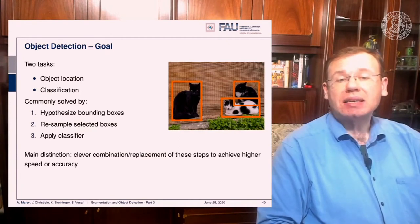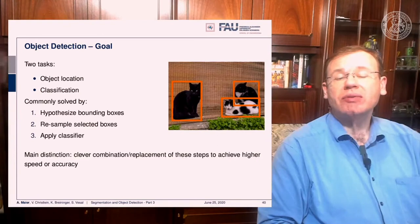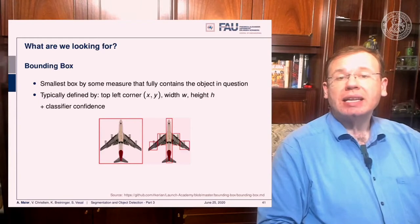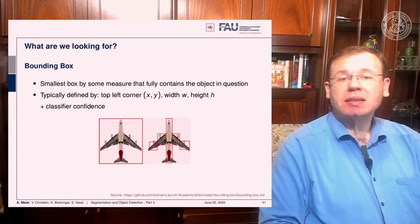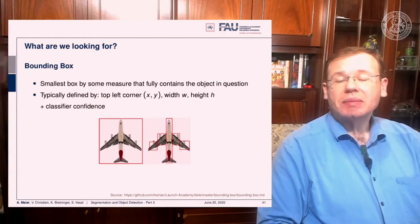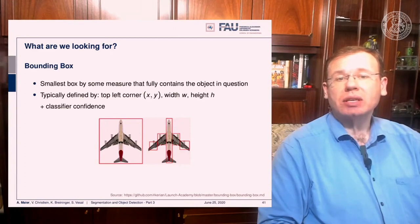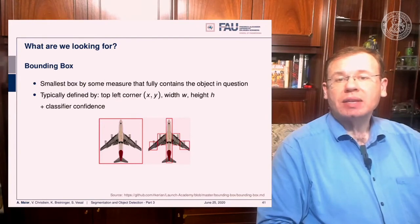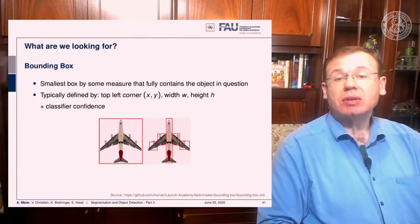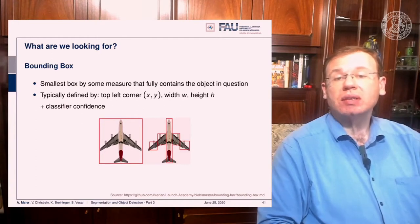The main distinction between methods is how you combine and replace those steps in order to achieve higher speed or accuracy. Looking at our plane example, we are looking for bounding boxes, which are typically defined as the smallest box that fully contains the object — defined by a top-left corner with width w and height h, plus a classifier confidence score. This can be used for detecting the entire plane or parts of the plane.